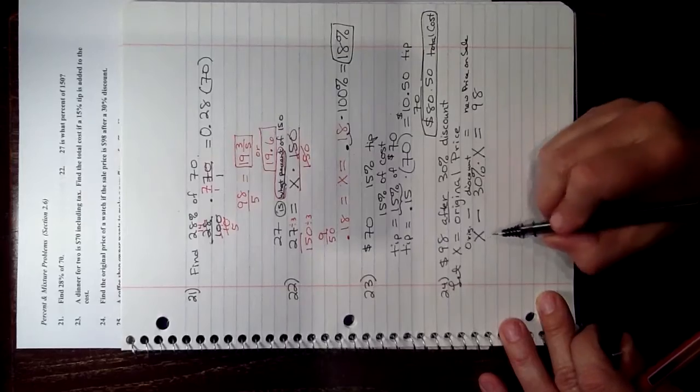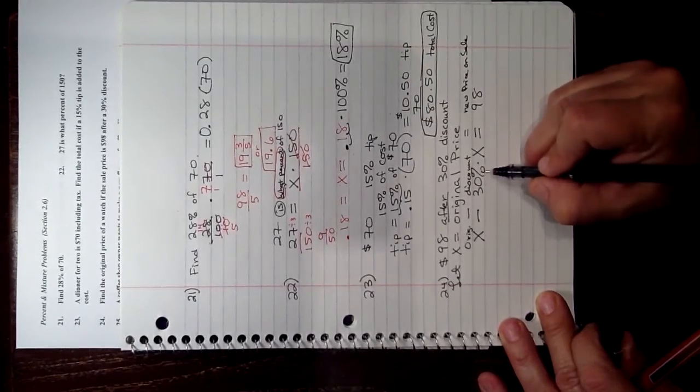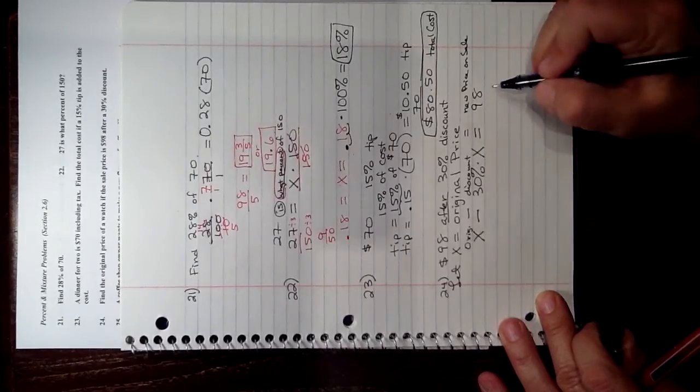So the original, we don't know, so we call it X. We take off 30% of X, and that's going to equal the sale price, $98.